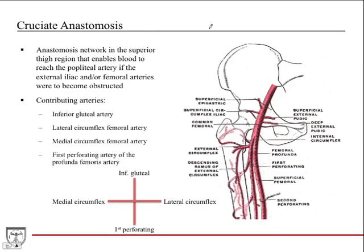The cruciate anastomosis is an anastomosis network in the superior thigh and posterior hip/gluteal region. It enables blood to reach the popliteal artery at the knee if the external iliac or femoral arteries become obstructed. Without this, you could have an ischemic lower extremity, so this anastomosis allows blood to bypass a blockage and continue to the popliteal, reaching the distal lower extremity.